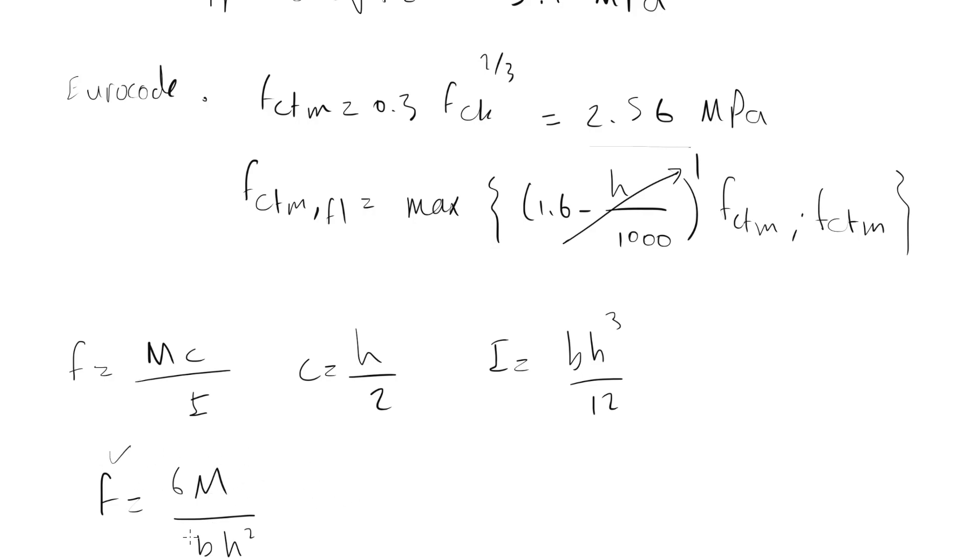So we have the value of F and H and now we can find the value of M. So leaving M alone, M equals to F BH squared divided by 6, which equals to 2.56 multiplied by 400, the width of the beam, and the height 600 squared divided by 6.